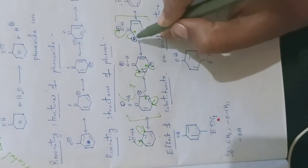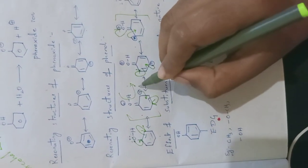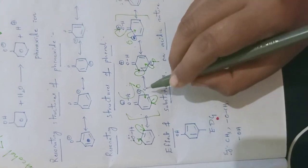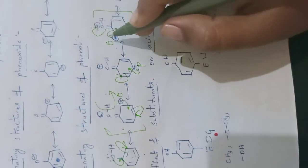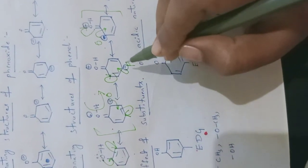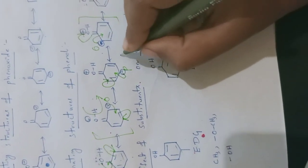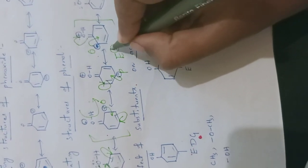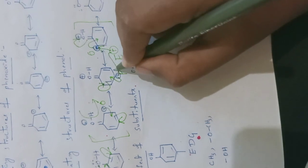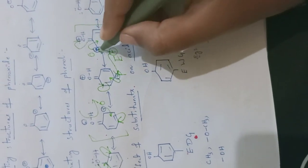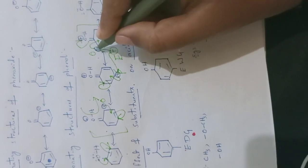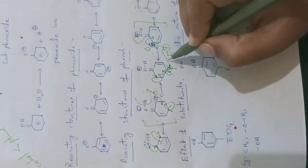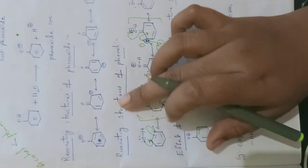During these resonating structures of phenol, negative charge is accommodated at the ortho and para positions of the phenol benzene ring. That means ortho and para positions are rich in electrons. So phenol can participate in electrophilic substitution reactions, and the incoming electrophile can attack either at the ortho position or at the para position, because only these two positions are rich with electrons.